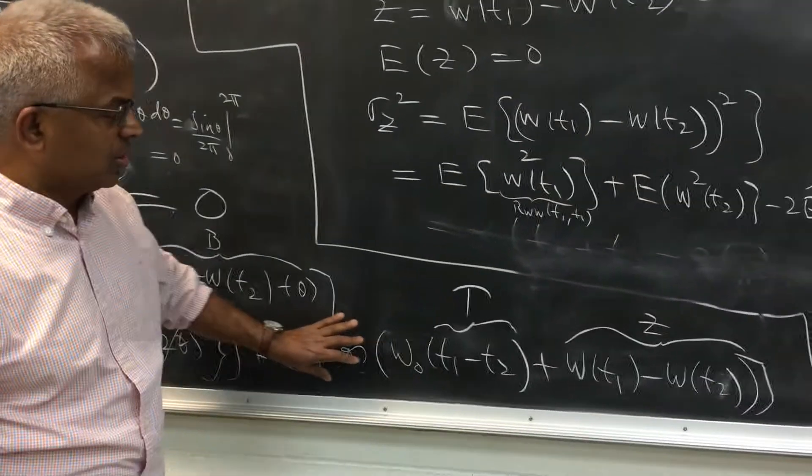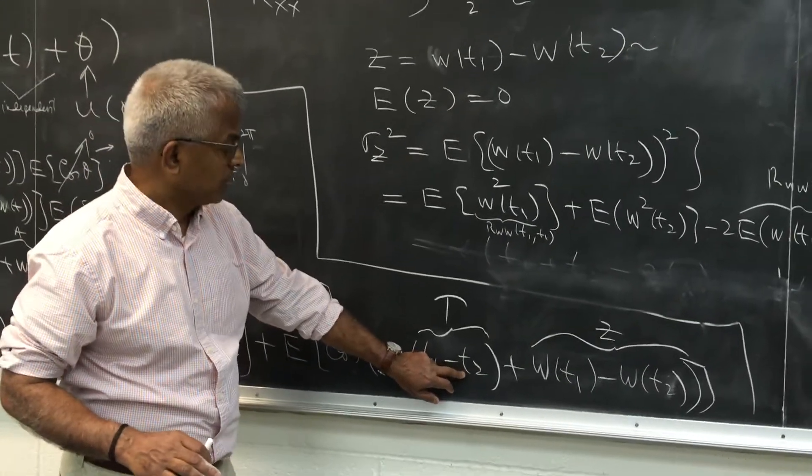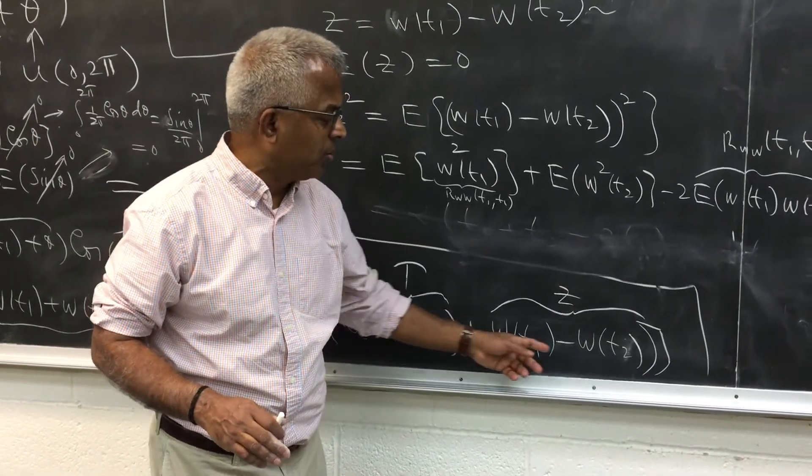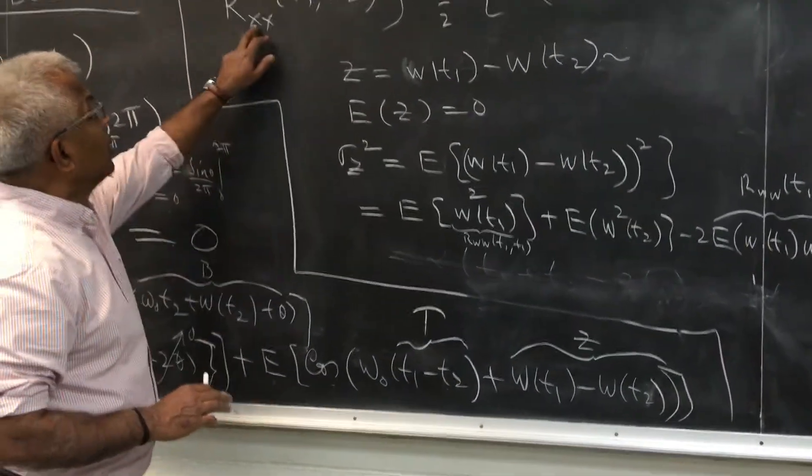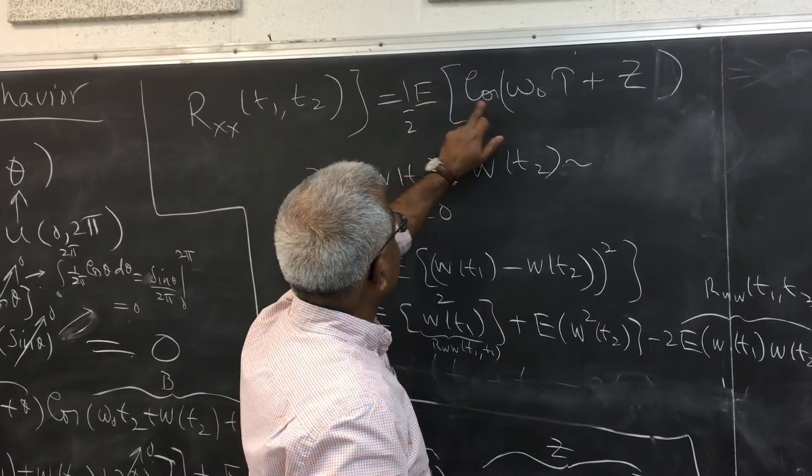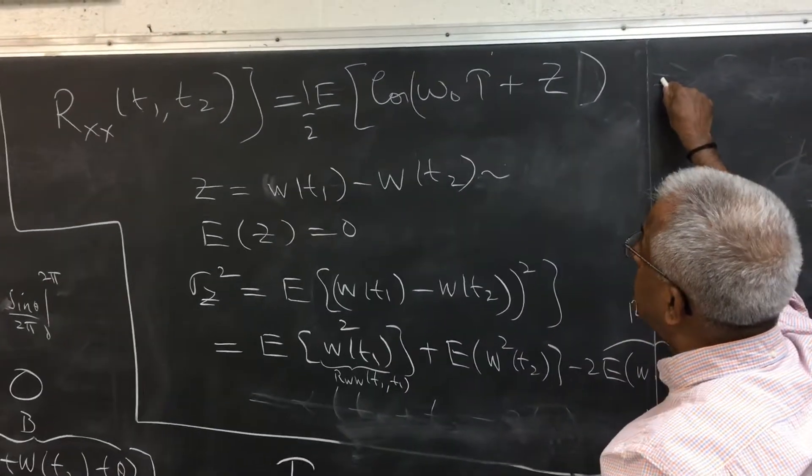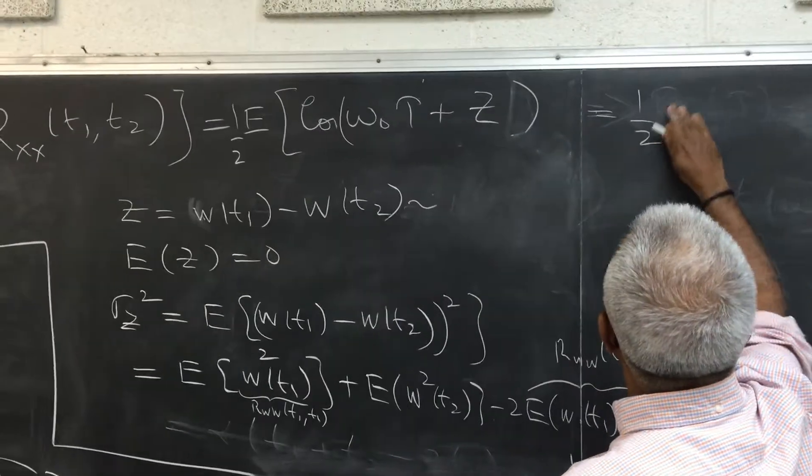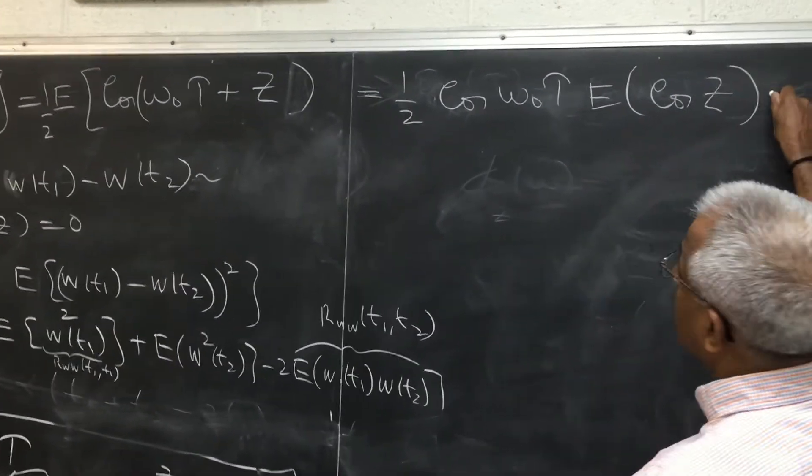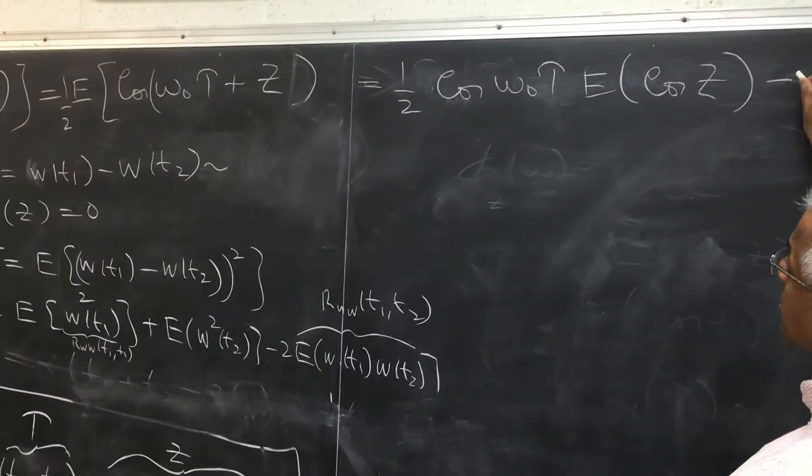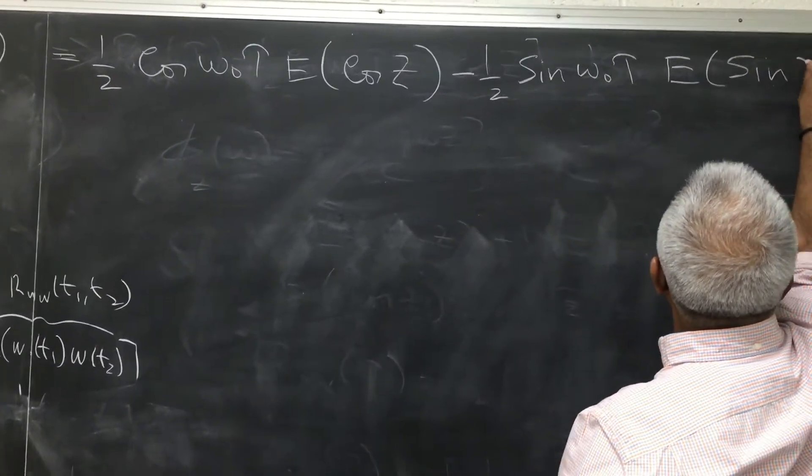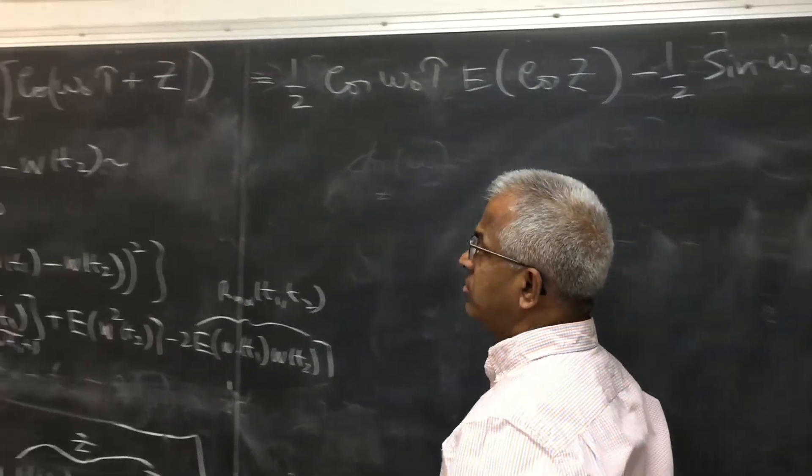Bottom line is we are faced with this expression. Let me call t1 minus t2 to be tau. And let me denote w(t1) minus w(t2) to be some random variable z. So this autocorrelation function of x(t) is of this form: expected value of cos(omega not tau plus z). If I expand this, this reads now cosine of omega not tau which is a constant, expected value of cos z minus half sine omega not tau expected value of sin z. So we need to find out the expected value of these two quantities.